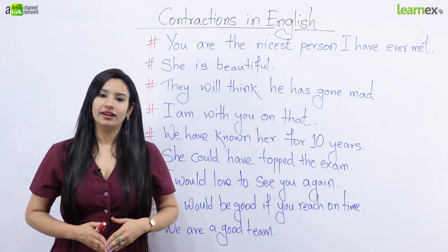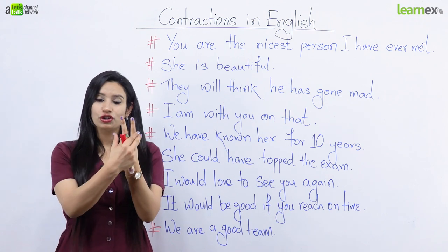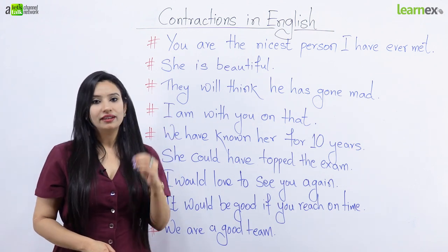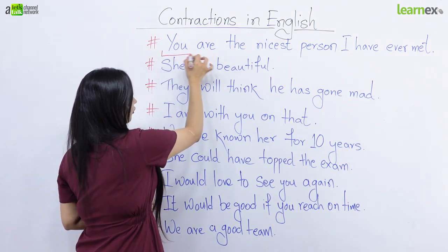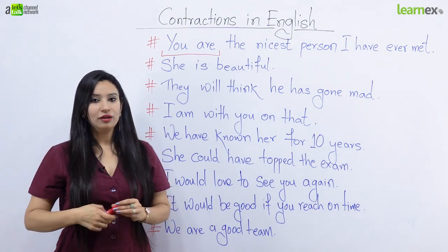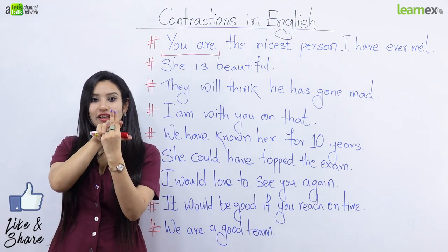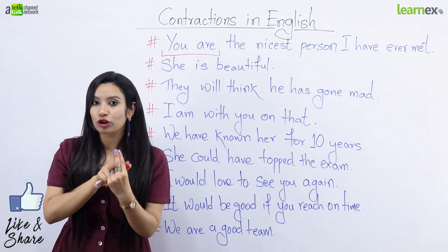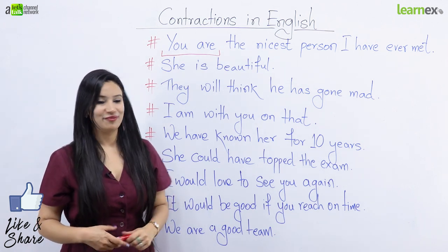Toh contractions hota kya hai? Contractions hota hai jab hum do words ko join karein, apostrophe laga ke. Aaiye is sentence mein dekhte hain hum kahaan do words ko join kar sakte hain. Toh pehla contraction hoga yahan pe — you aur are ka. Yahan pe hum do words, you aur are ko jodenge aur banayenge you're. Hum isko bolenge you're — hum isko y-o-u-r, your ki tarah pronounce karte hain.